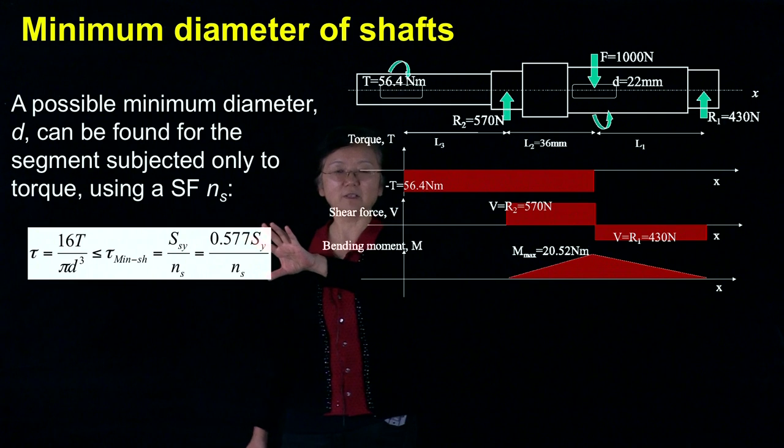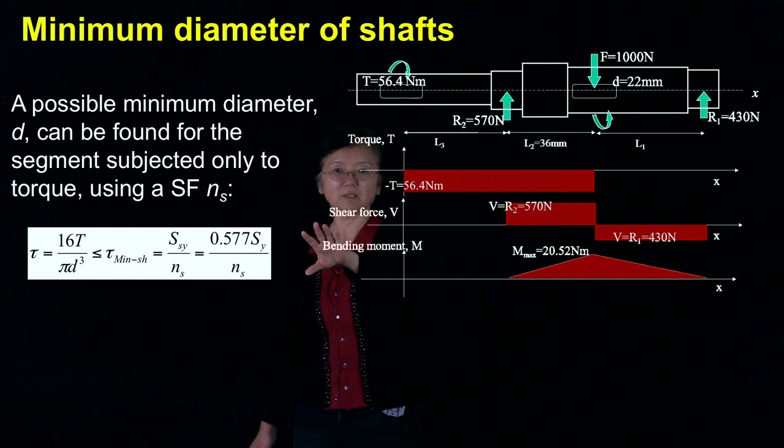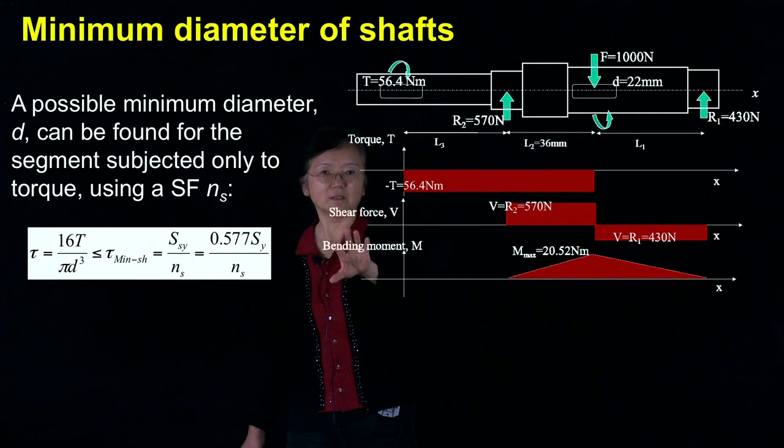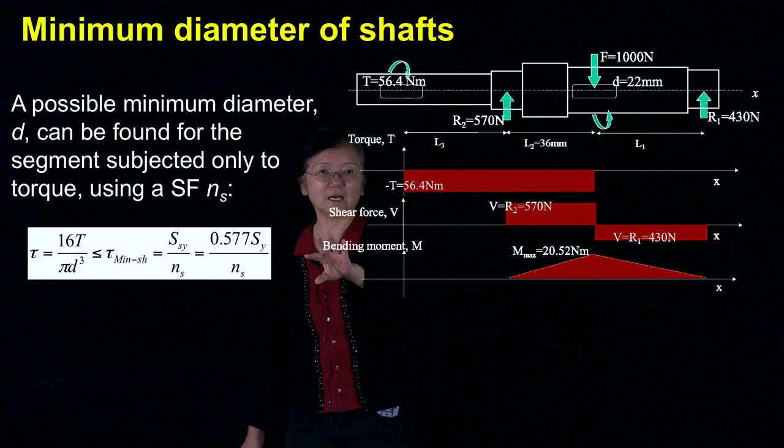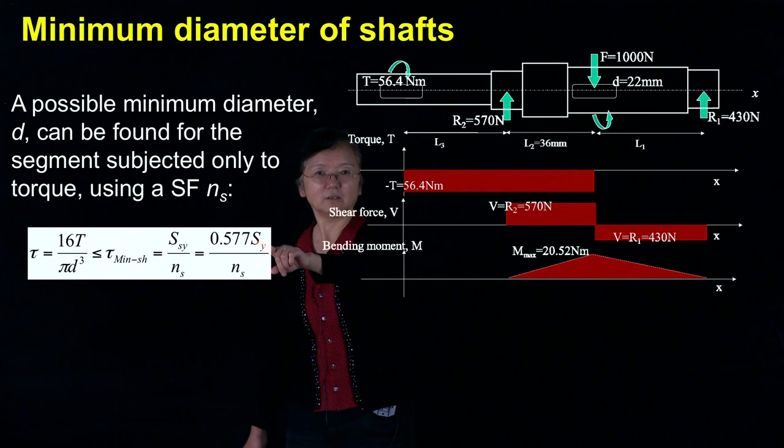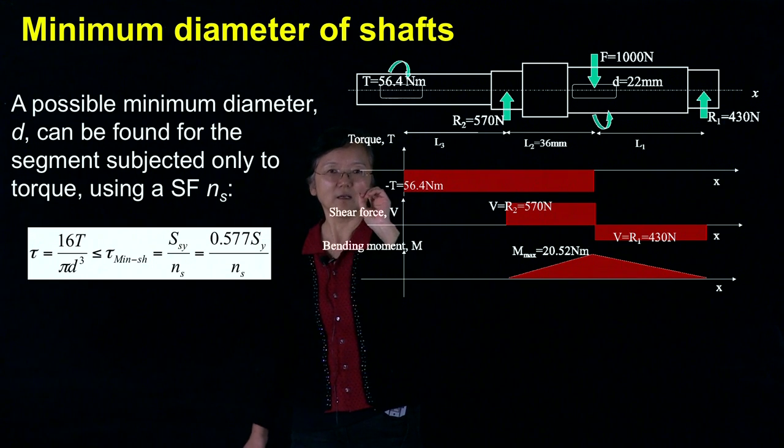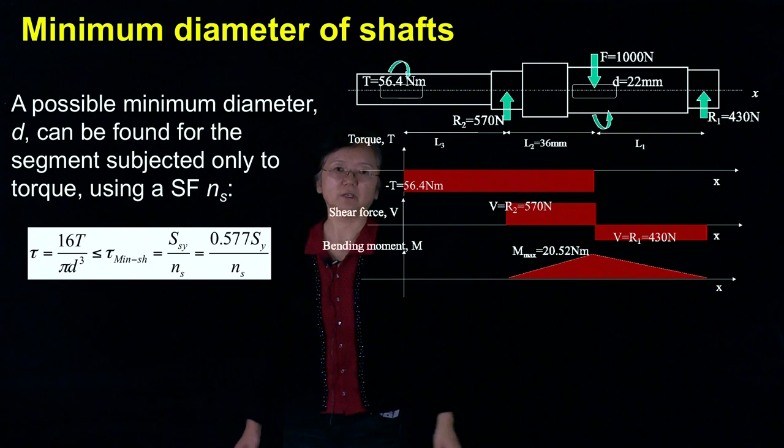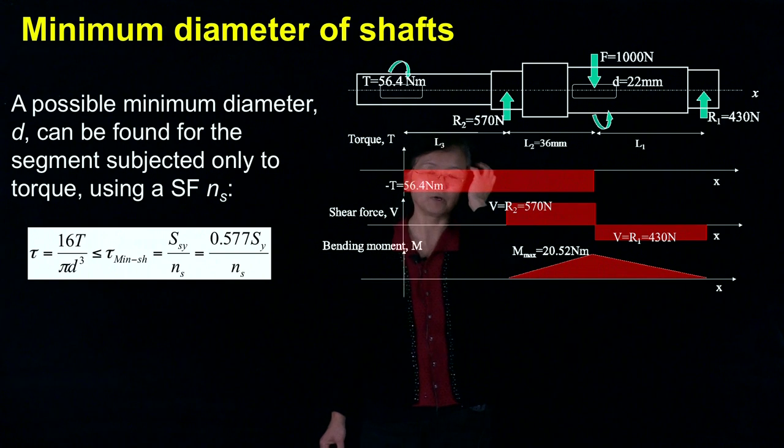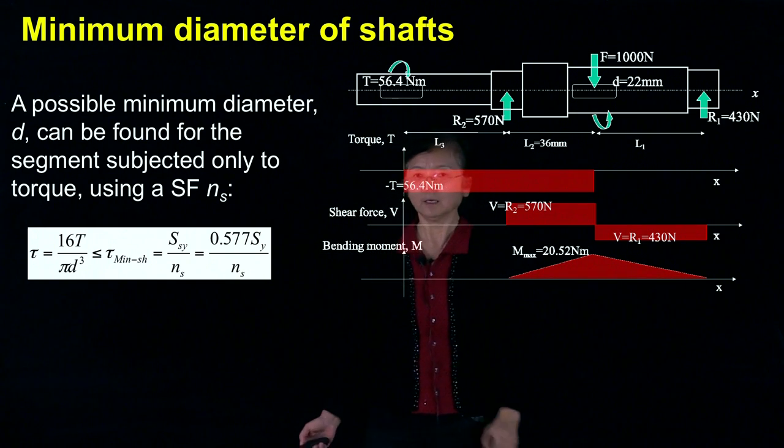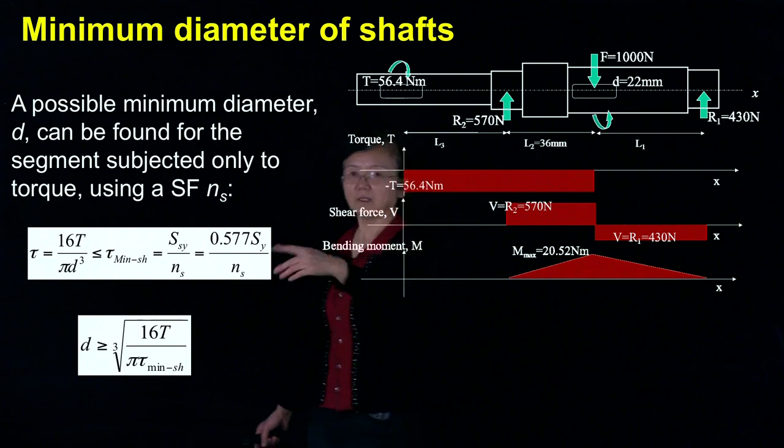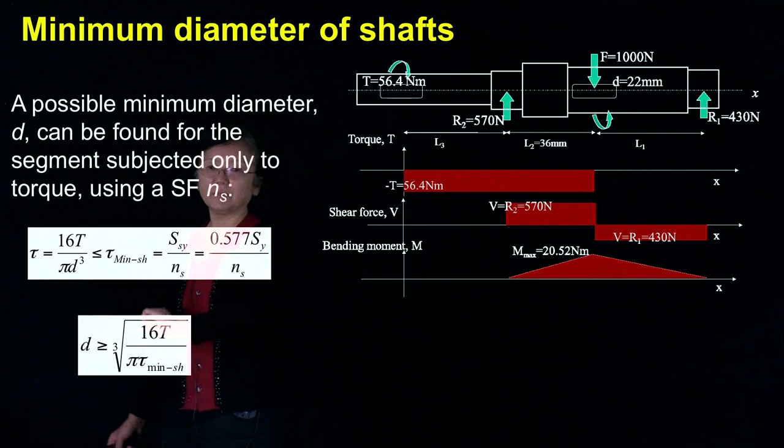What is the shear yield limit? You see here, 0.577 times the yield limit. That is the yield shear limit determined from the distortion energy theory. That's the thing we practiced in the homework.